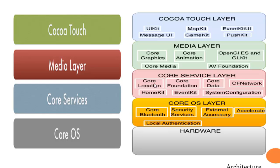CoreLocation provides services related to the location of your application. CoreFoundation is the interface that provides data management and service features for your iOS application. CoreData provides the technology to manage your data. HomeKit is a framework for talking with and controlling connected devices in a user's home. EventKit is responsible for controlling all events — it is an event handler. System Configuration stores all the services and files related to the configuration of your system.